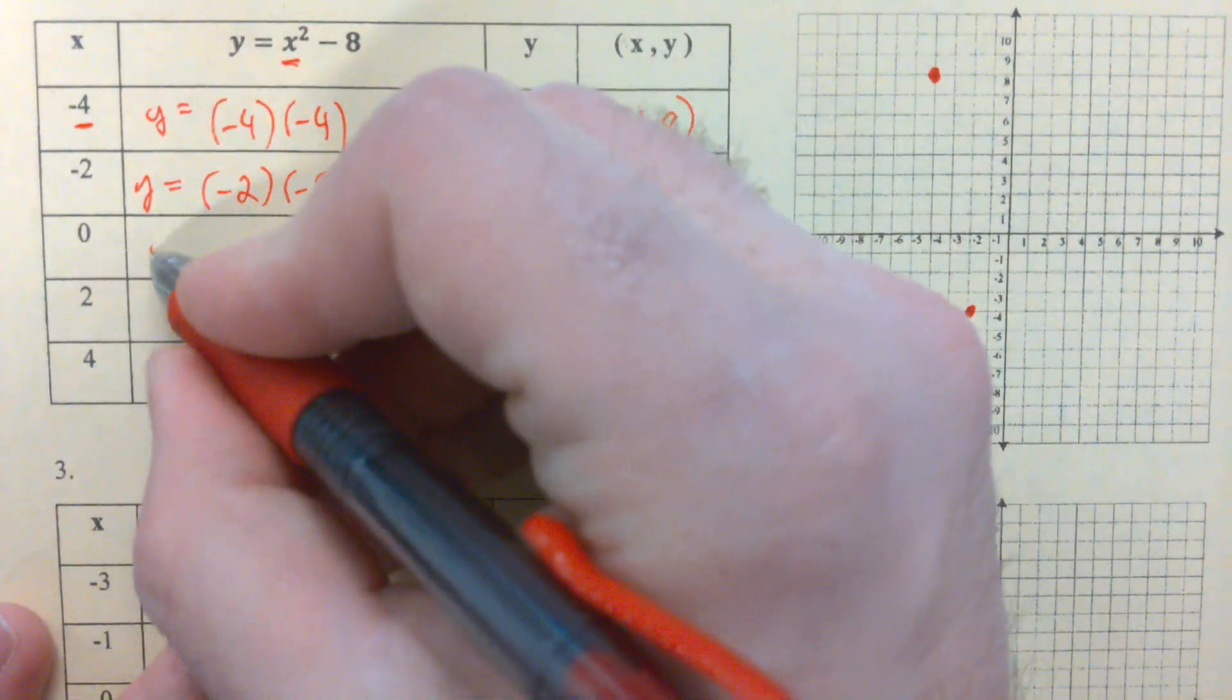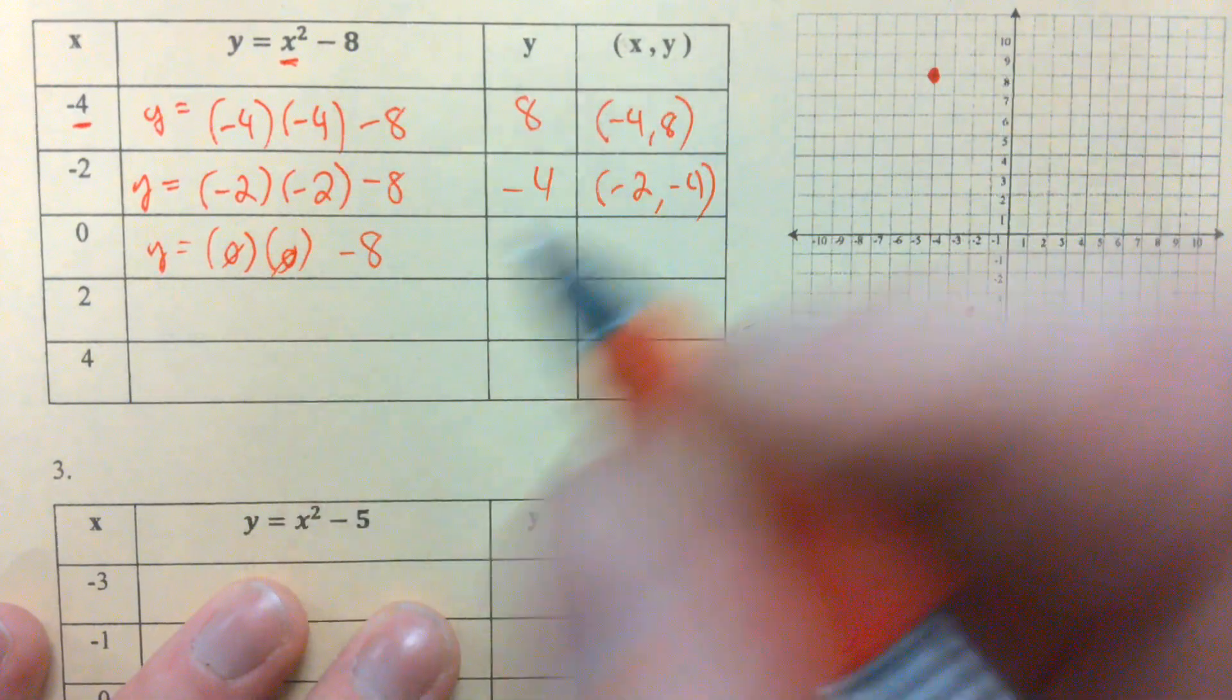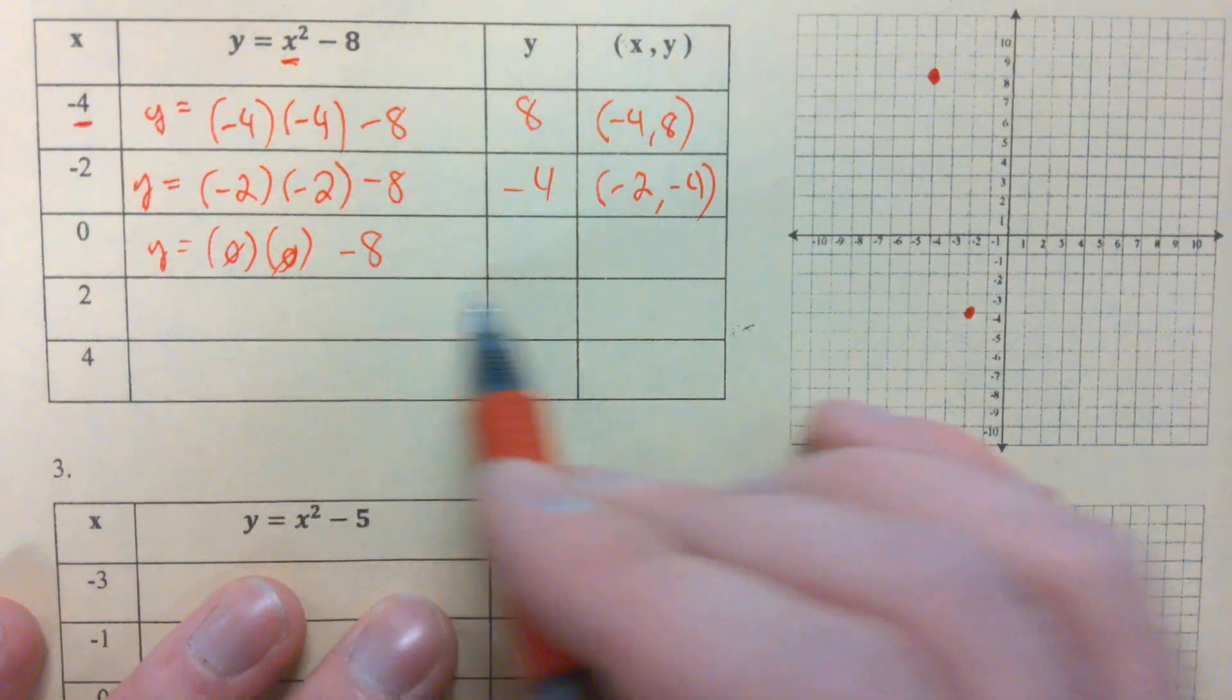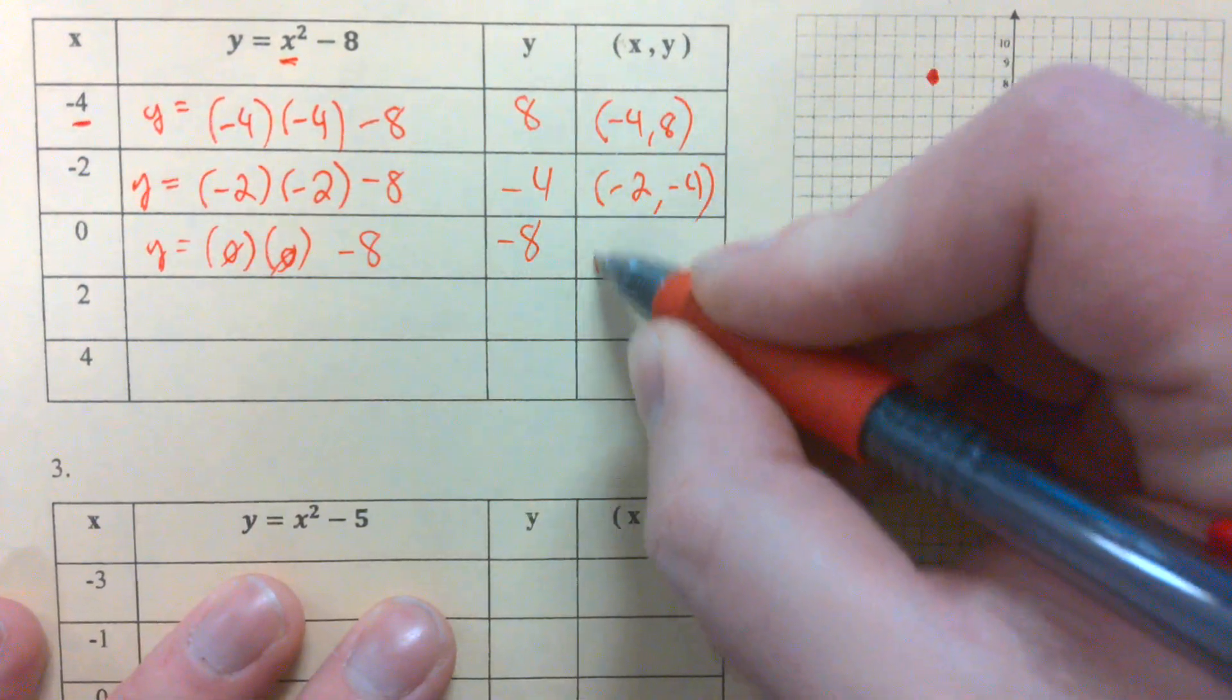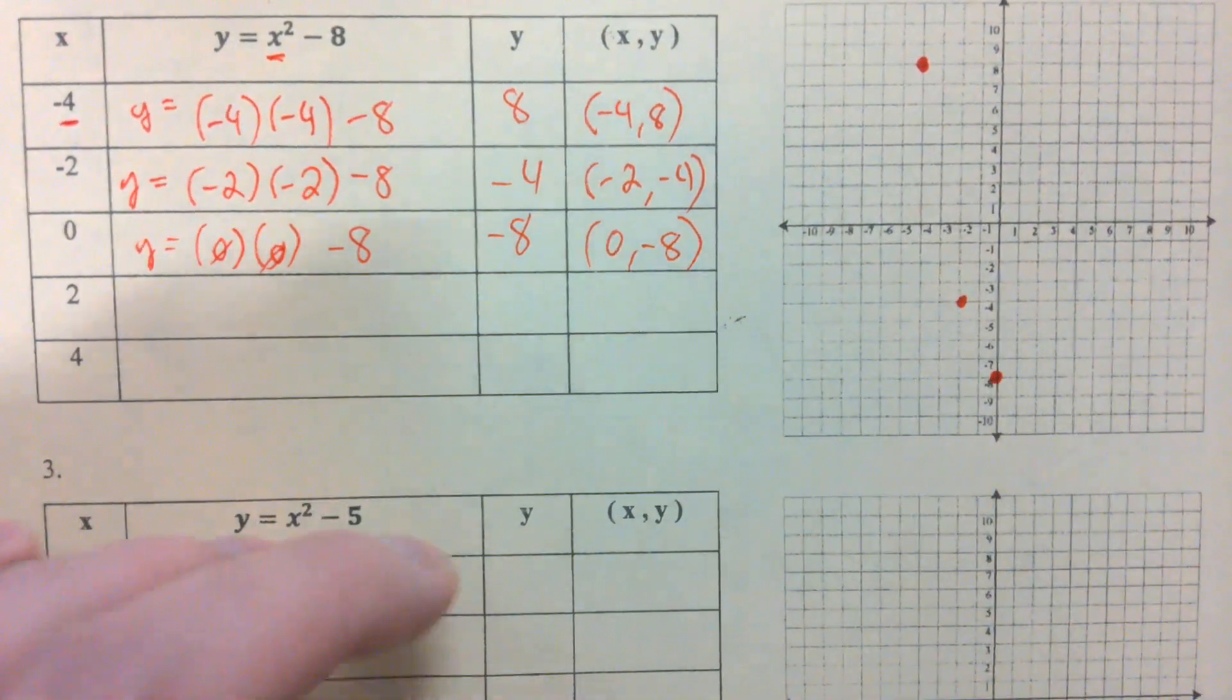Plug in 0. Y is equal to 0 times 0 minus 8. What's 0 times 0? 0. And 0 minus 8 is just negative 8. There's my y-intercept. 0 comma negative 8.